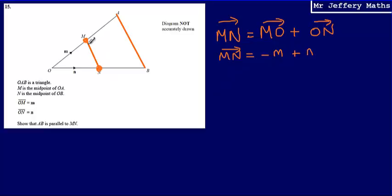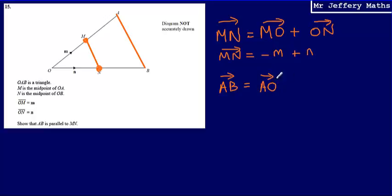What I now need to do is write the vector AB. I can say that the vector AB is going to be the vector from A to O, plus from O to B. So to get from A to B, I go from A back to O, and then from O to B.